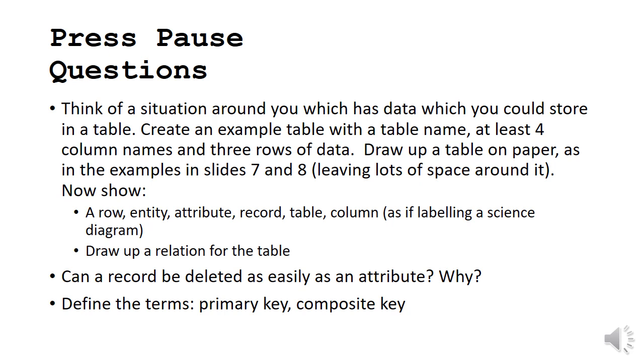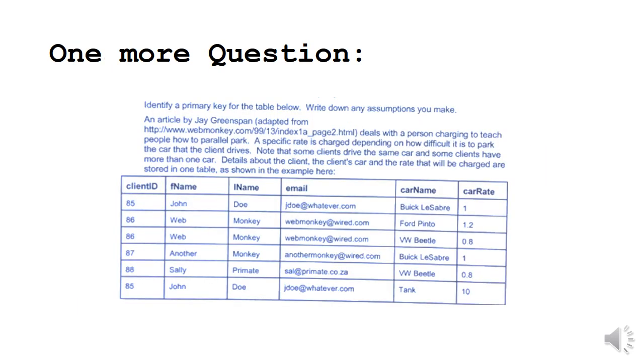Can a record be deleted as easily as an attribute? And why or why not? And then define the terms primary key and composite key. When you finish this, another question.